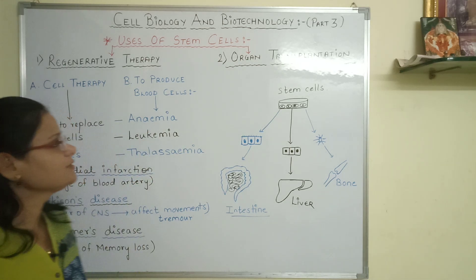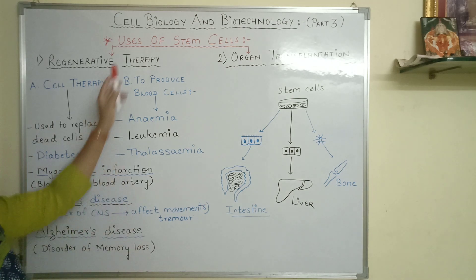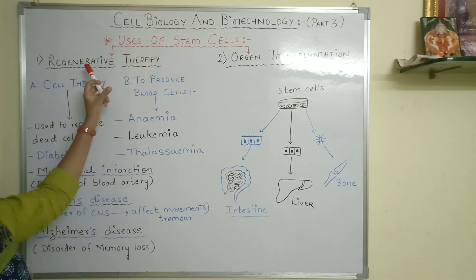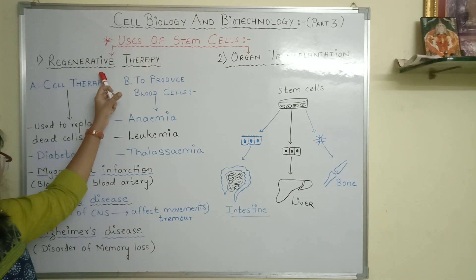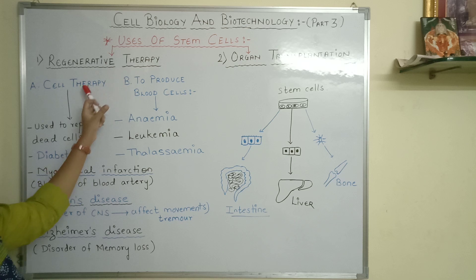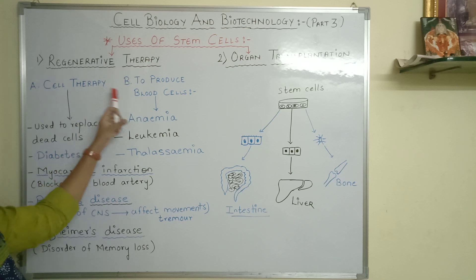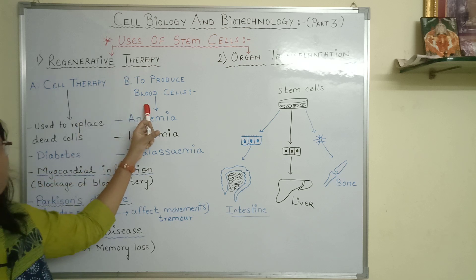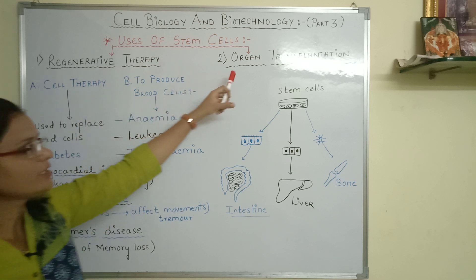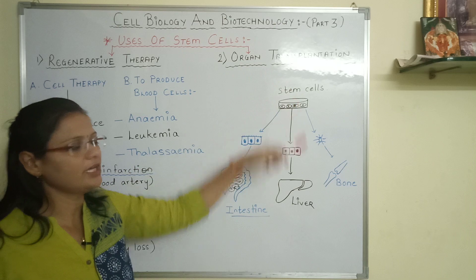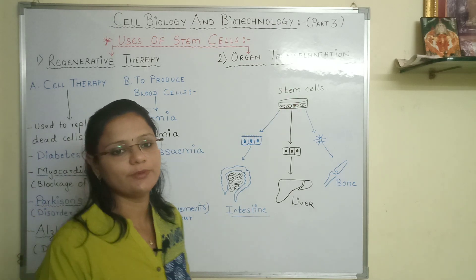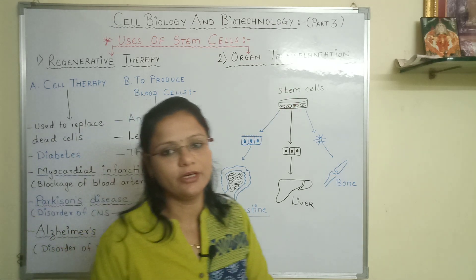So the uses of stem cells include regenerative therapy — which covers cell therapy and producing blood cells — and the next part is organ transplantation, which we will see next.